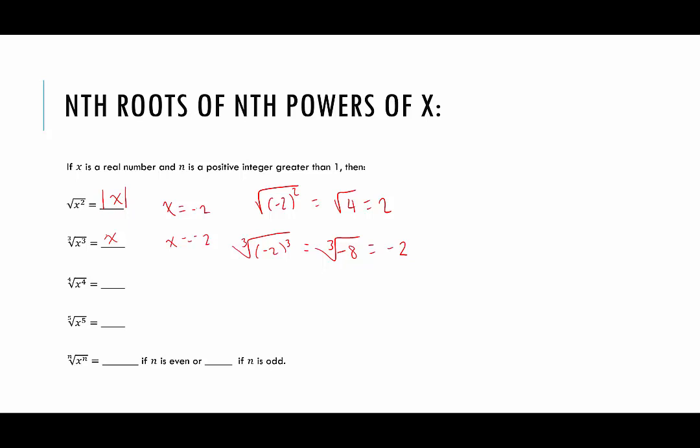Now what about the fourth root of x to the fourth? When we raise something to the fourth power, no matter what we raise to the fourth power, it's going to end up being non-negative. Which means when we take the fourth root of x to the fourth, the result will be the absolute value of x. And then the fifth root of x to the fifth would be x itself, because we can have negative fifth roots. So to summarize: if n is even, the nth root of x to the n is the absolute value of x, and if n is odd, it would be x itself.